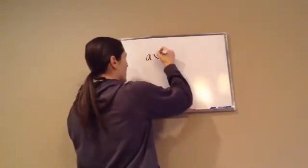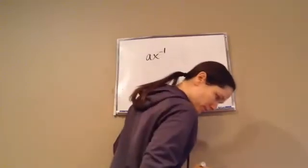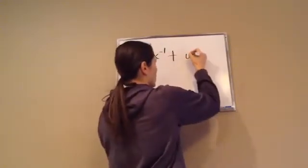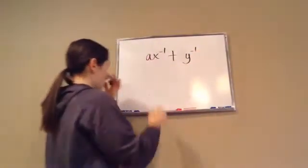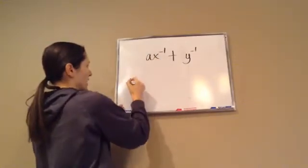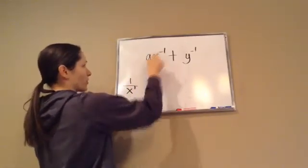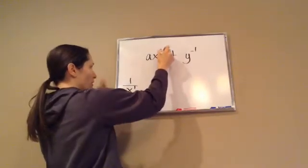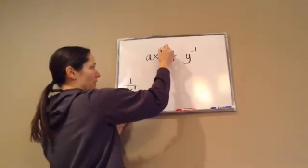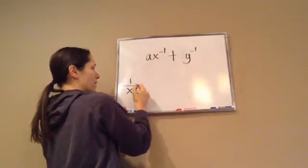So here we go, ax to the negative 1 plus y to the negative 1. Now remember, this x to the negative 1 is like going 1 over x to the 1. And that's how we convert that, because we want to make all of our exponents positive. So remember, you change it to its reciprocal, and then you can make the positive exponent.